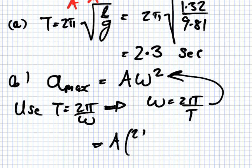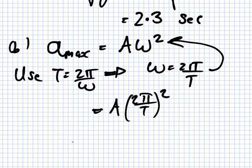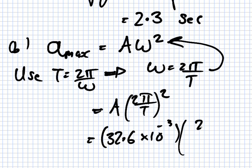A(2π/T)². And we have the A, it is 32.6 millimeters. We have the 2π, and we have the time.